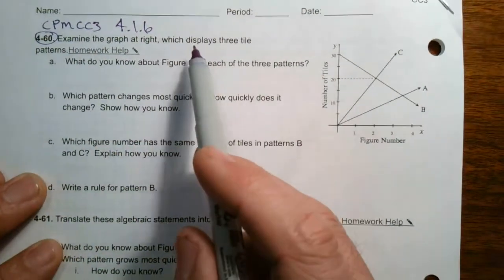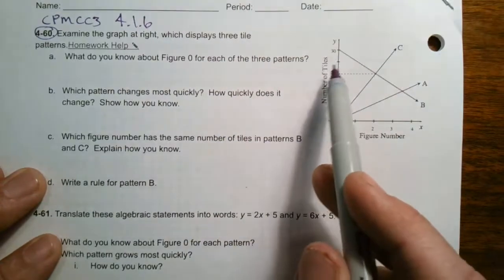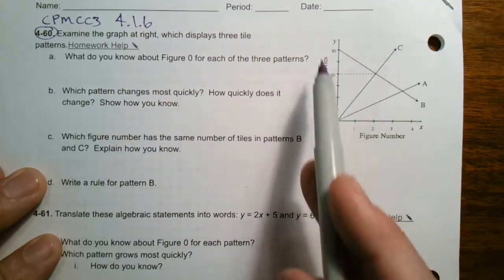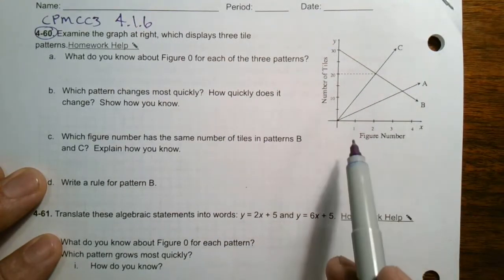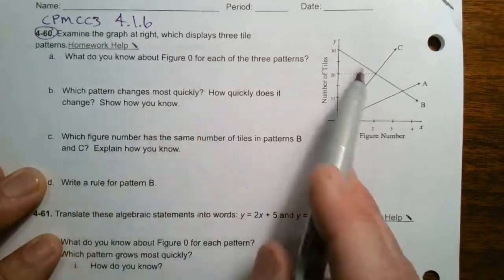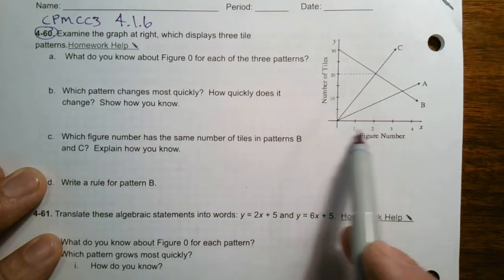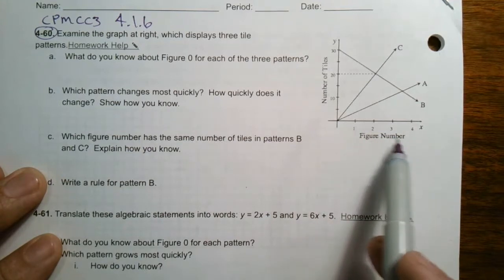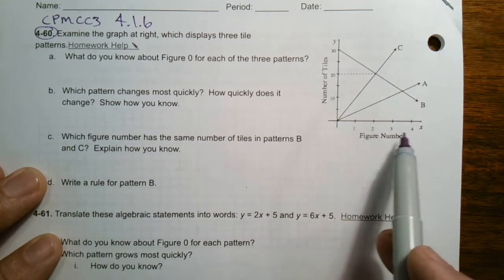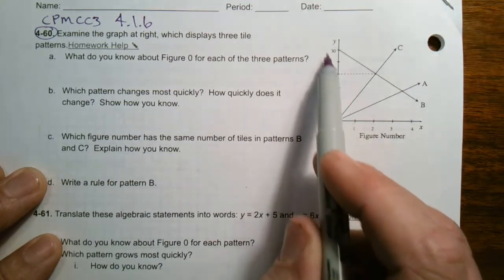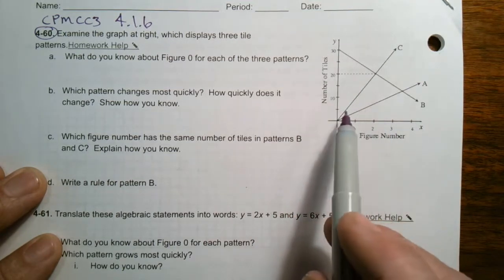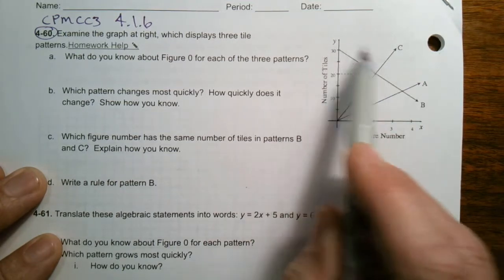So it says, examine the graph at the right, which displays three tile patterns. So we have three lines here that display different tile patterns, and it wants us to answer these questions based on the fact that my X here is my figure number. Figure 1, 2, 3, 4, and then my Y is the number of tiles in each of the figures. So we can do some interpretation based on what we have.